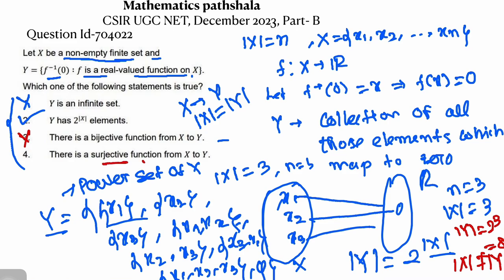In option 4, it is said there is a surjective function from X to Y. For a surjective function, we need the cardinality of Y to be less than or equal to the cardinality of X. Here, cardinality of Y is 8 and cardinality of X is 3, so 8 is not less than 3. Therefore, option 4 is also false. So option 2 is true: Y has 2^|X| elements. Thank you.